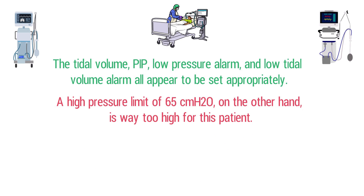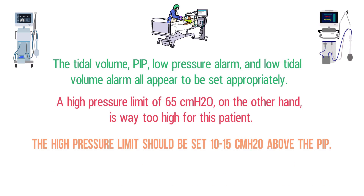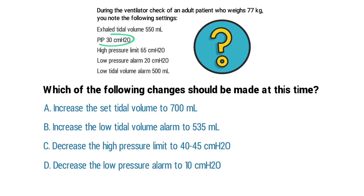However, a high pressure limit of 65 is way too high for this patient. As a general rule of thumb, the high pressure limit should be set 10 to 15 centimeters of water pressure above the peak inspiratory pressure — otherwise the patient has an increased risk of barotrauma or lung injury if too much pressure is applied to the lungs.